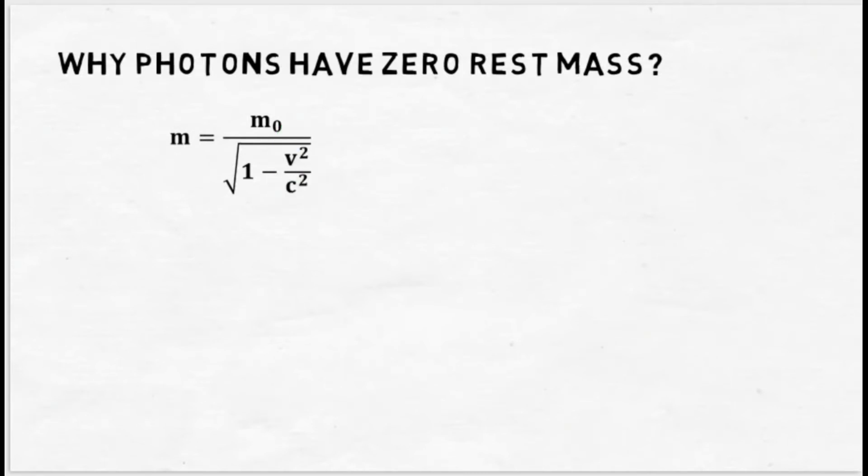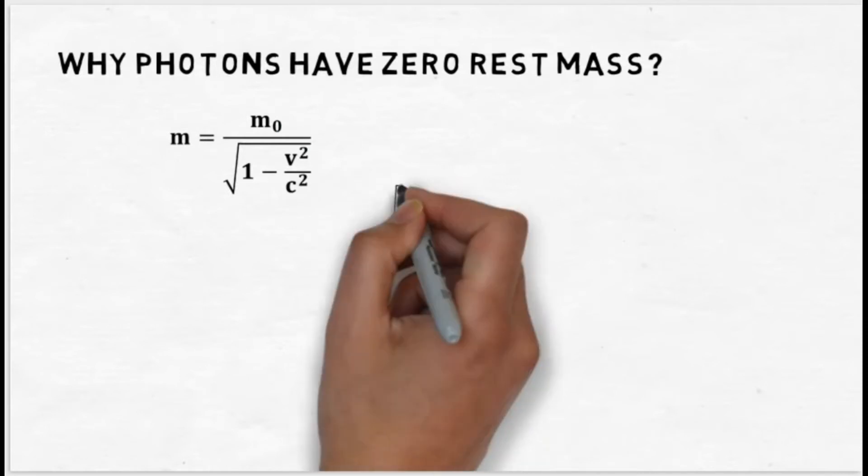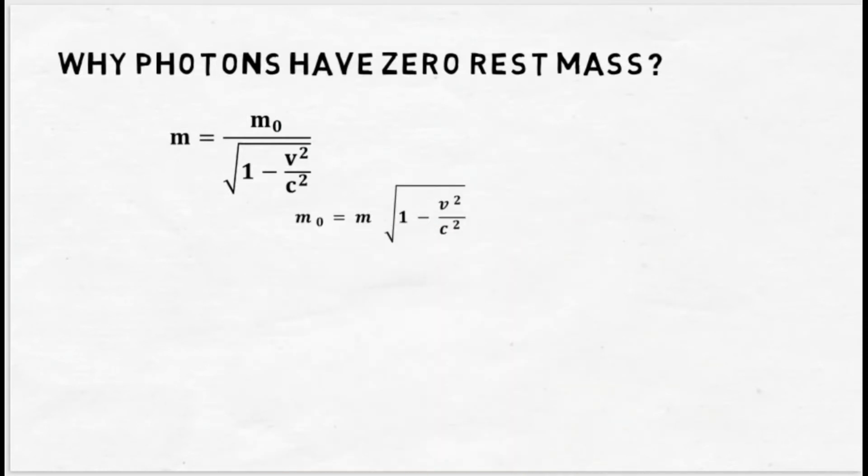Now if we multiply both the sides of this equation with under root 1 minus v squared by c squared, we will get the rest mass is equal to relativistic mass multiplied by under root 1 minus v squared divided by c squared.